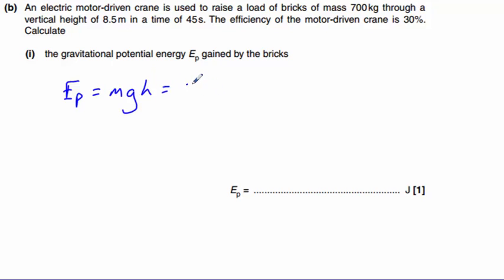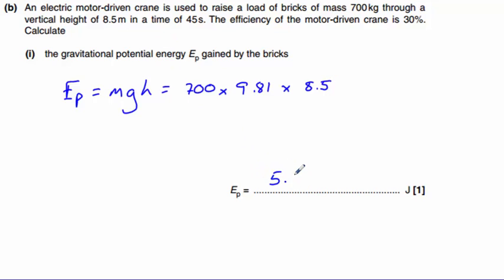So EP equals MGH. Our mass is 700, multiplied by 9.81, multiplied by a height of 8.5, which gives us an answer of 5.84 times 10 to the power of 4 joules.